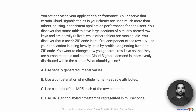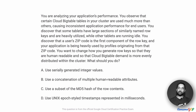In this project scenario, you are analyzing your application's performance. You observe that certain Cloud Bigtable tables in your cluster are used much more than others, causing inconsistent application performance for end users. You discover that some tablets have large sections of similarly named row keys and are heavily utilized, while other tablets are running idle. You discover that a user's zip code is a first component of the row key and your application is being heavily used by profiles originating from that zip code. You want to change how you generate row keys so that they are human readable and so that Cloud Bigtable demand is more evenly distributed within the cluster. What should you do?